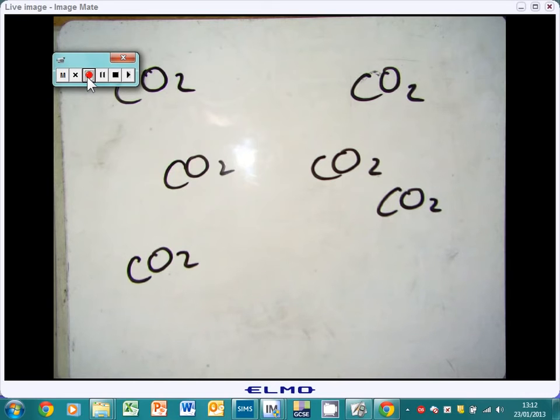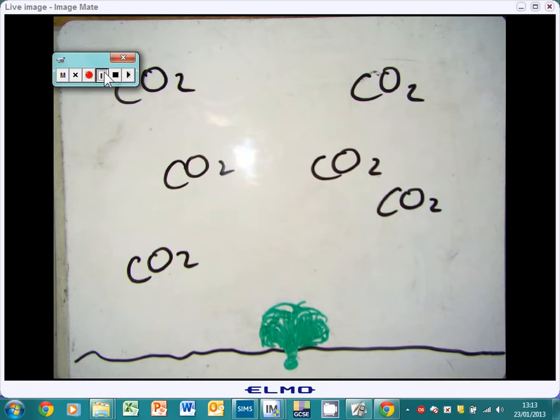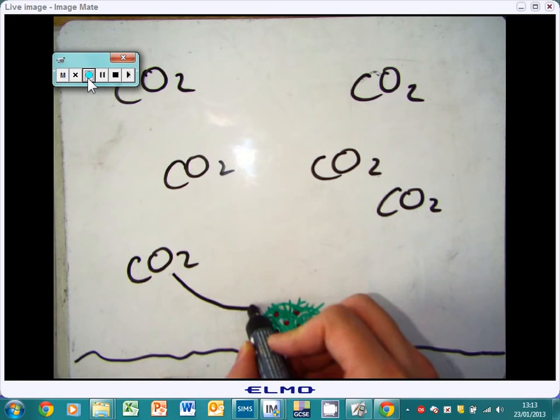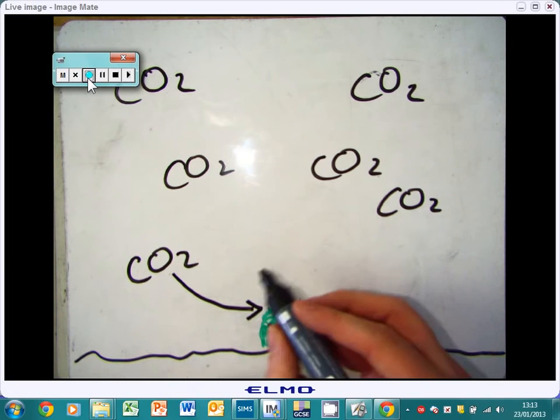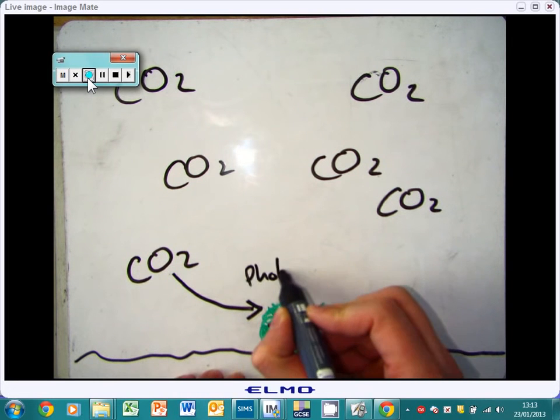After about 2 billion years, plants started to form. These plants took in the carbon dioxide from the air, as I've said previously, and a process called photosynthesis occurs.